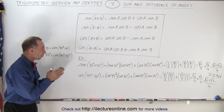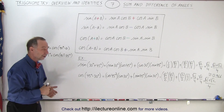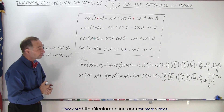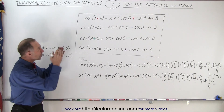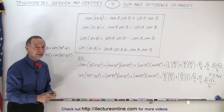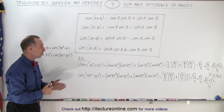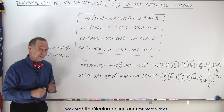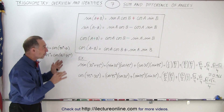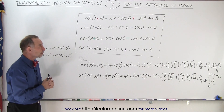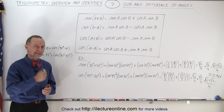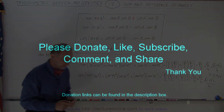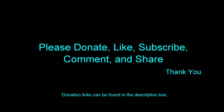Definitely try to memorize what's on that table. You might wonder how we know those identities are true in the first place — we took some examples and it looks correct, but how do we actually prove it? We'll do that in the next couple of videos. Thank you.